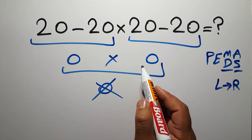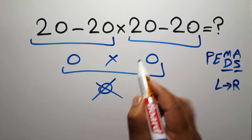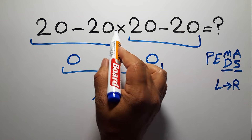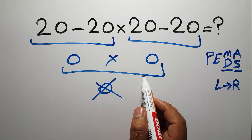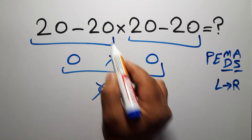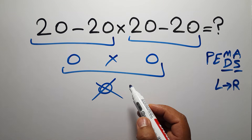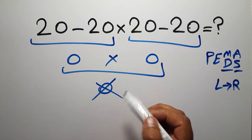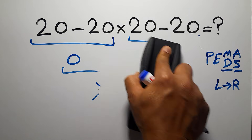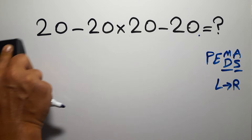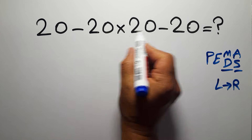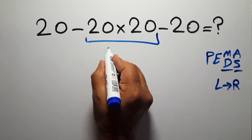In this expression, we have two subtractions and one multiplication. According to PEMDAS, first we have to do this multiplication, not this subtraction. If you do this subtraction before this multiplication, it is wrong. So first, this multiplication — 20 times 20 is just 400.